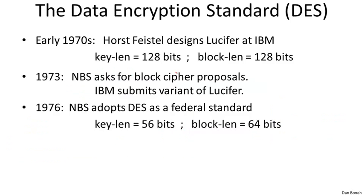Let's talk about the history of DES. In the early 1970s, IBM realized that their customers were demanding some form of encryption. So they formed a crypto group, and the head of that group was Horst Feistel, who in the early 70s designed a cipher called Lucifer. Lucifer had a number of variations, and one of the later variations had a key length of 128 bits and a block length of 128 bits.